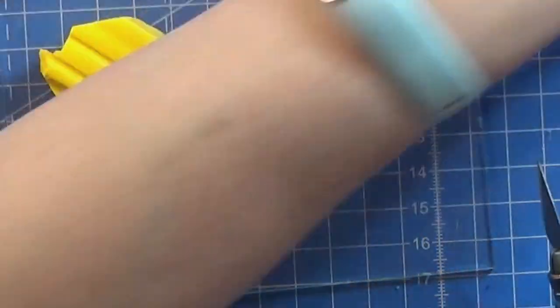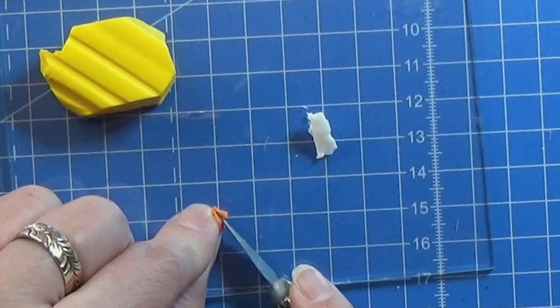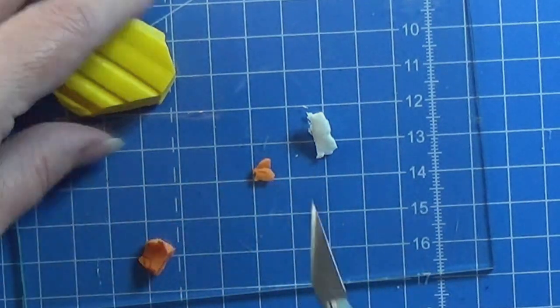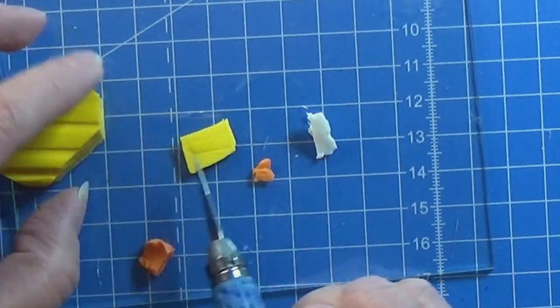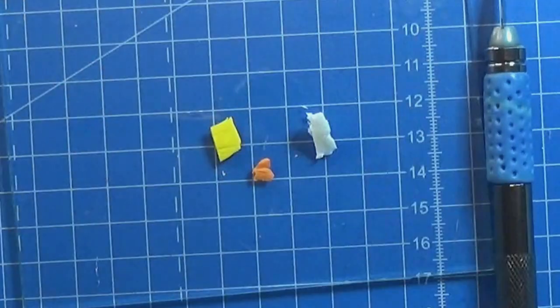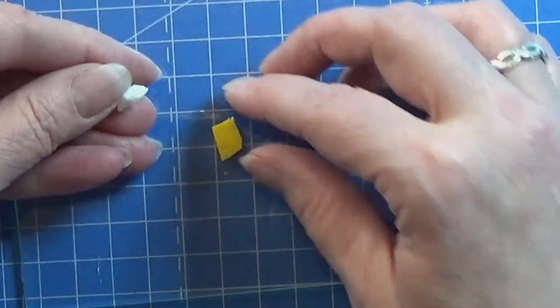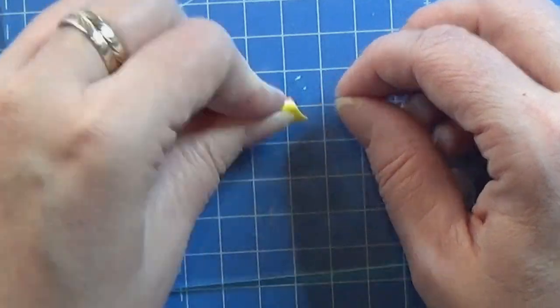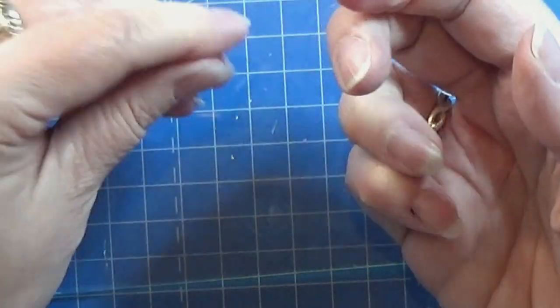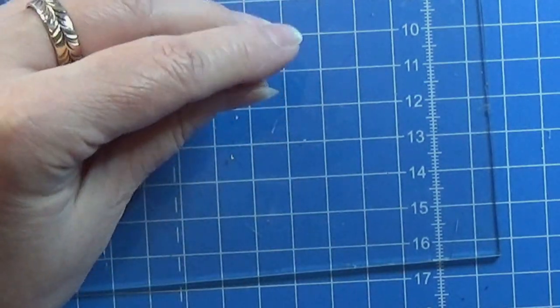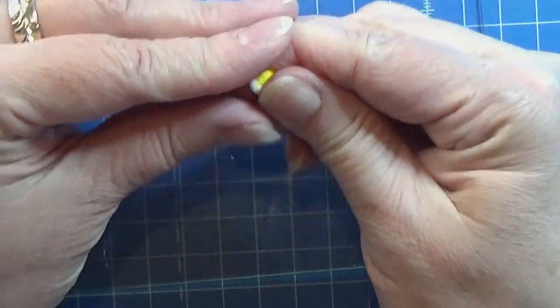So I took a piece of this translucent white, a tiny bit of orange and a tiny bit bigger piece of the yellow. So the translucent is biggest, then the yellow and then the orange. And I'm just mixing the three parts together into one uniform color.